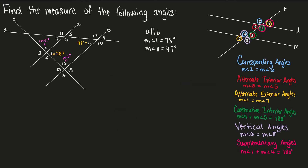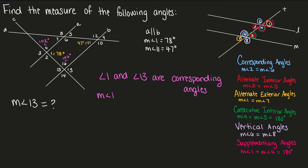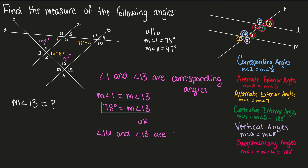Next, let's find the measure of angle 13. Angle 1 and angle 13 are corresponding angles. Corresponding angles are congruent, so if angle 1 equals 78 degrees, then angle 13 also equals 78 degrees. We can also verify this: angle 16 plus angle 13 equals 180 degrees, and solving for angle 13 gives us 78 degrees.